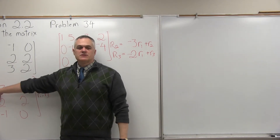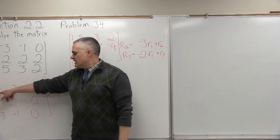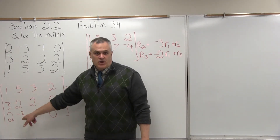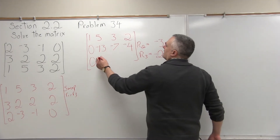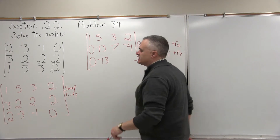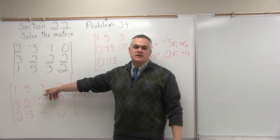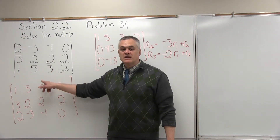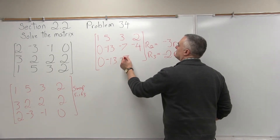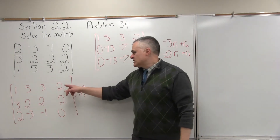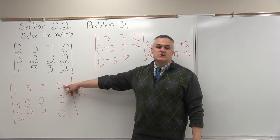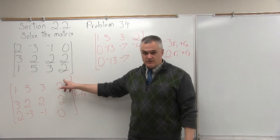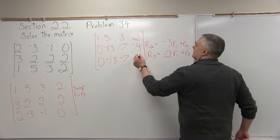Next position: negative 2 times 5 is negative 10, plus negative 3 is negative 13. Then: negative 2 times 3 is negative 6, plus negative 1 is negative 7. Finally: negative 2 times 2 is negative 4, plus 0 is negative 4. So row 3 becomes 0, negative 13, negative 7, negative 4.